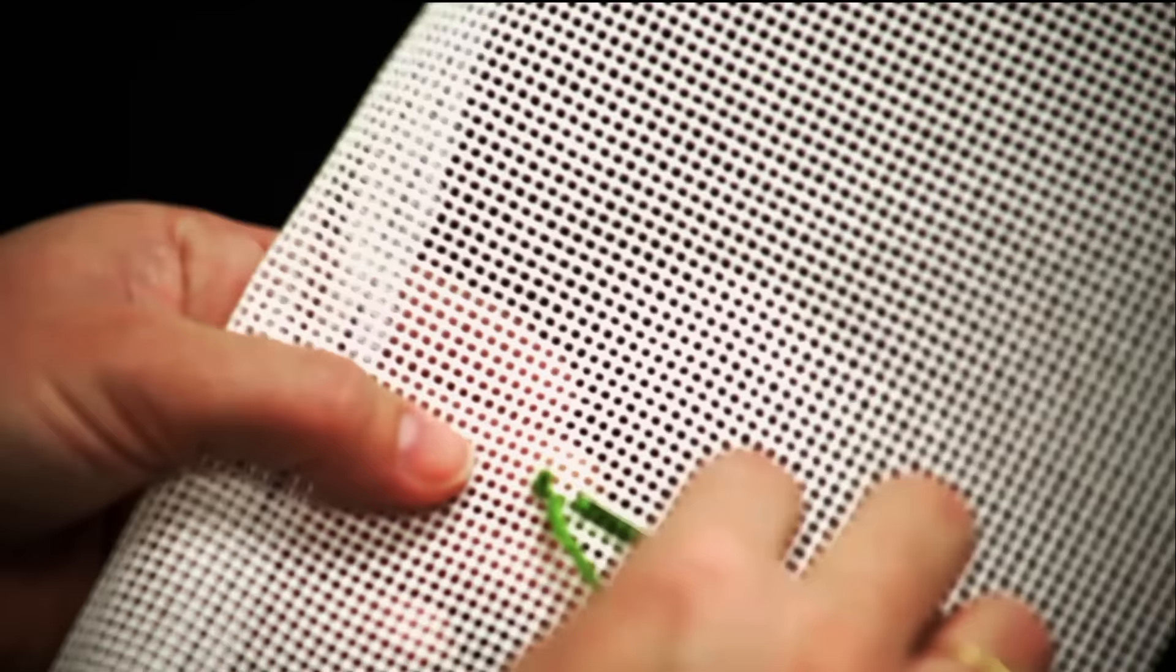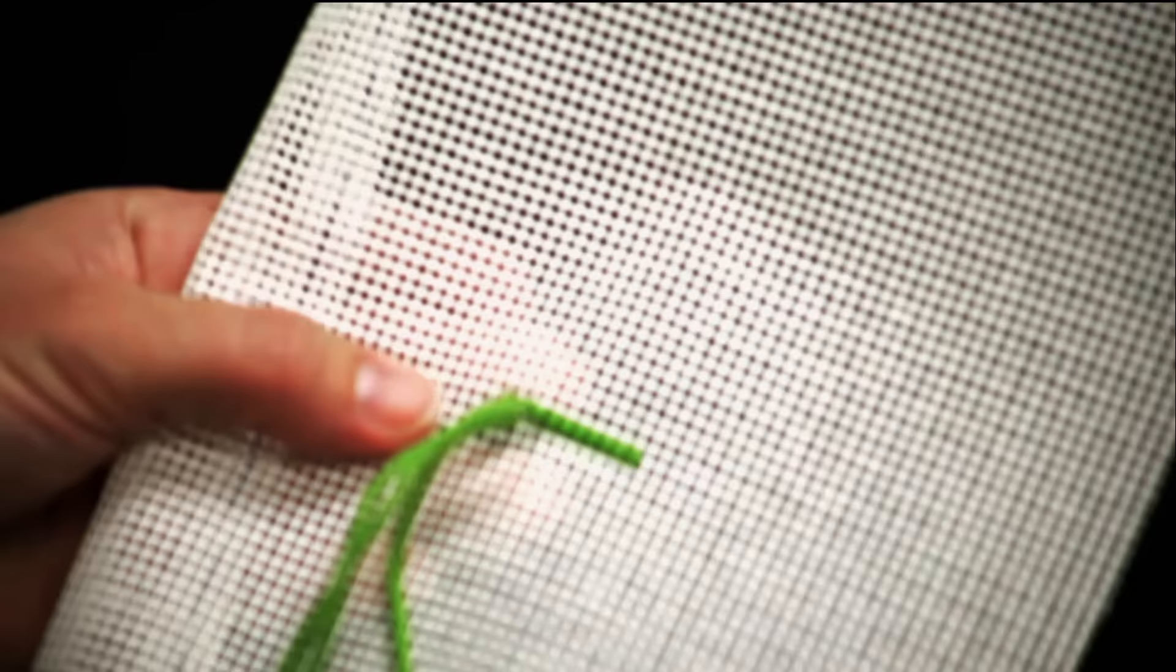When you have reached the edge of your painted canvas or run out of thread, secure the thread by turning the canvas over and running it beneath a few of your previously placed stitches.